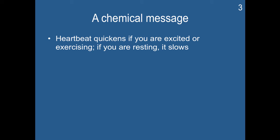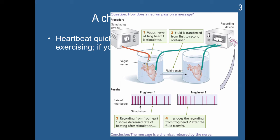First, we're going to take a quick step back and look at how it was discovered that neurons communicate via a chemical message. Your heartbeat quickens if you are excited or exercising, and slows when you are resting. To investigate this, researchers did an experiment where they took a frog heart — which, as a muscle, can still be functional outside the body, similar to what happens in a heart transplant. They placed it in a fluid mimicking the extracellular environment, stimulated the heart on the vagus nerve, and recorded its activity alongside a second heart.